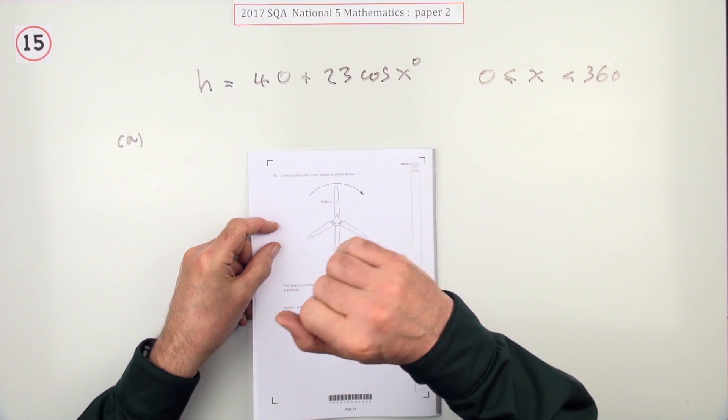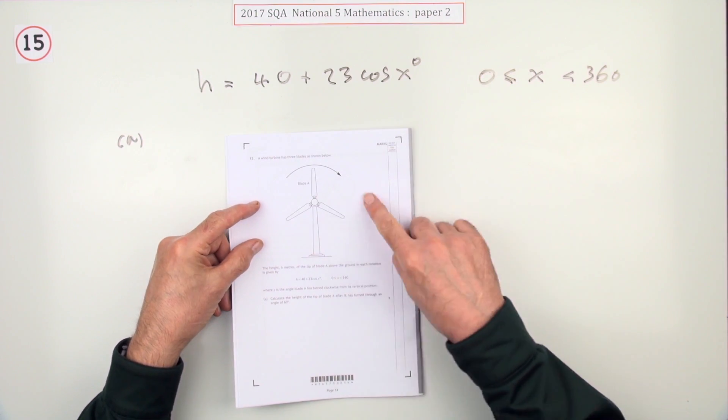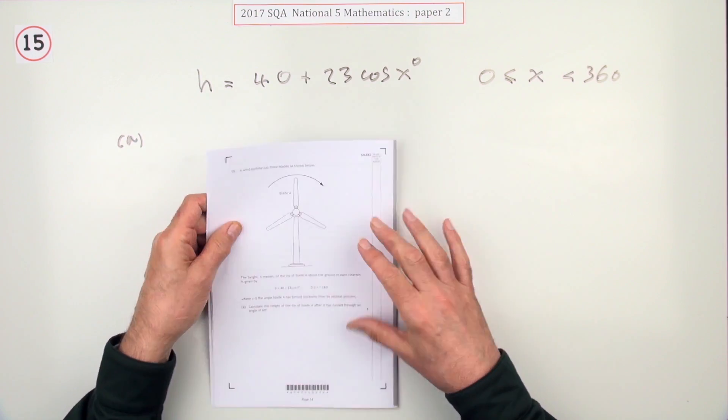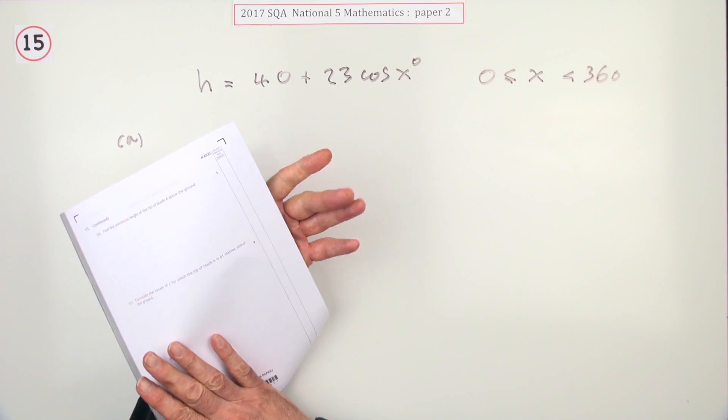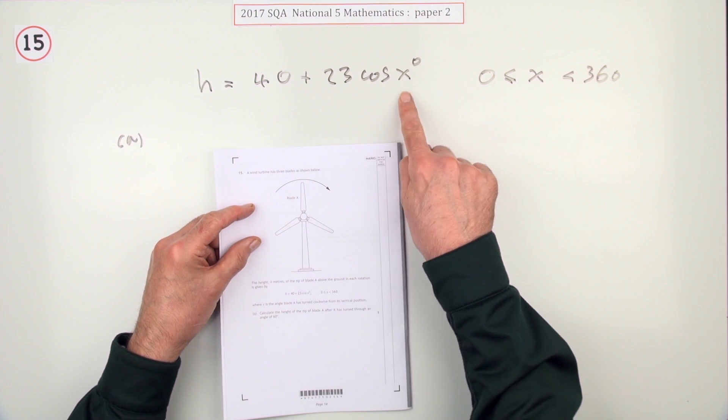Question 15, the last question in paper 2 of the 2017 National 5 exam. There we go, there's the trig equation question. It's in three parts here for a total of six marks. Well, there's the equation again.